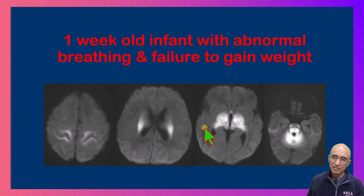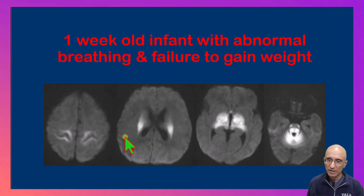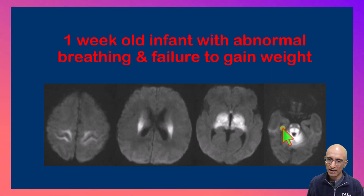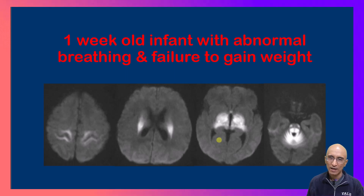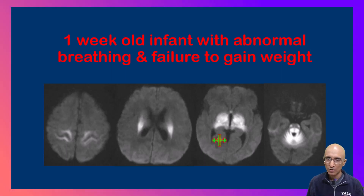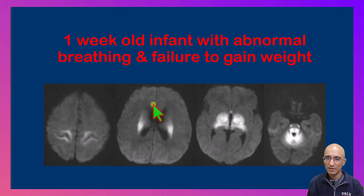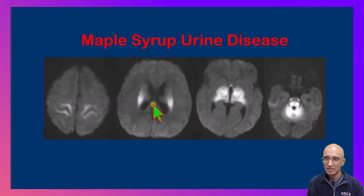So we have a child with abnormal breathing and failure to gain weight, with restricted diffusion confined predominantly to the myelinated regions of the brain. During further evaluation, blood levels showed increased levels of leucine, and urine was positive for ketones. The constellation of imaging and laboratory findings is consistent with maple syrup urine disease.